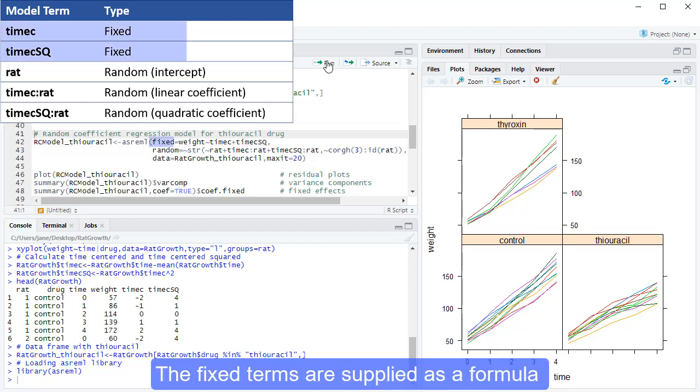The fixed terms are supplied as a formula with the response variate, weight, on the left of the tilde operator, and the fixed terms, timesc plus timesc-squared, on the right.